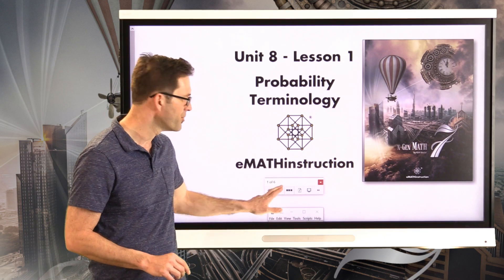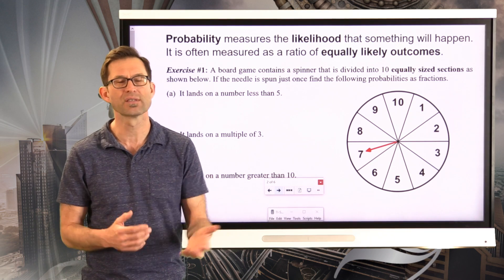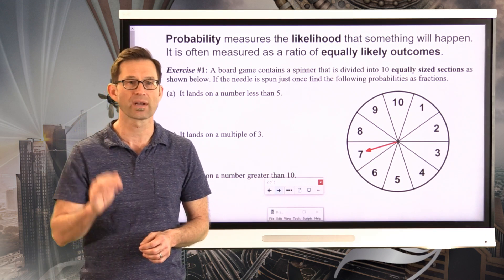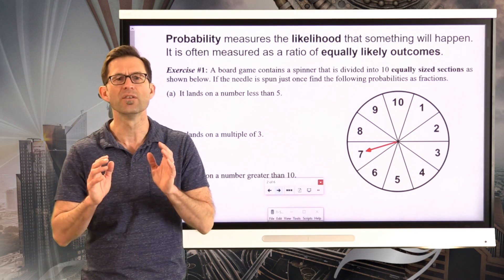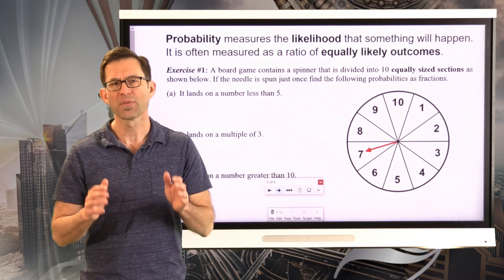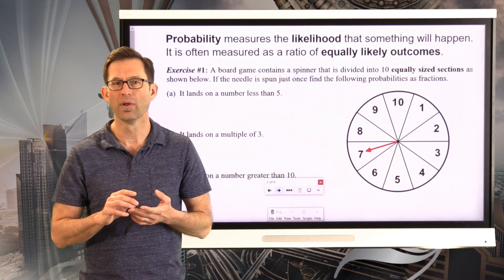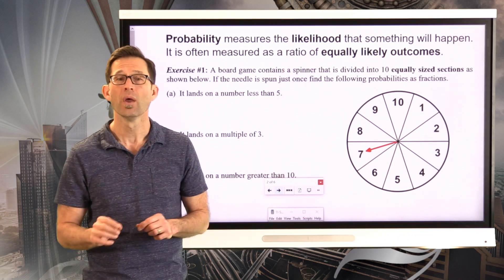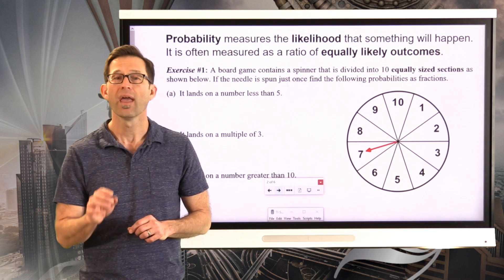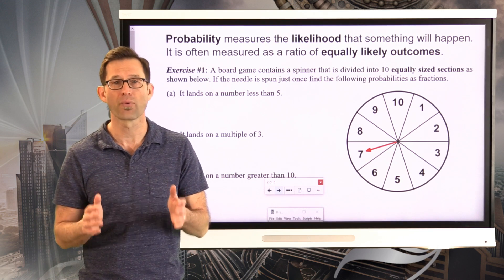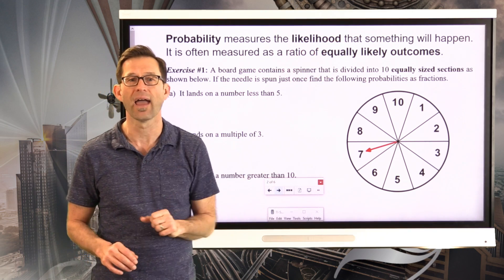Probability measures the likelihood that something will happen. A lot of things in math are definitive — how far will a projectile fly, or how many things do I have to sell to make money. But there are many times in the world, whether we're talking about weather or the probability of making a free throw in basketball, where the outcome isn't guaranteed. In that case, we bring in probability. It's often measured as a ratio of equally likely outcomes.